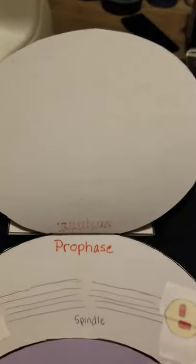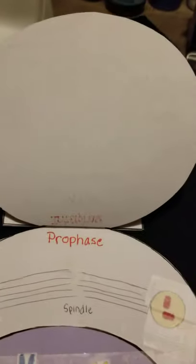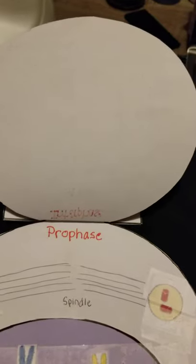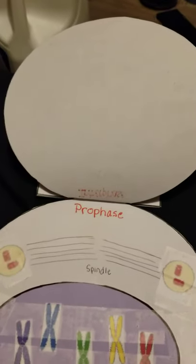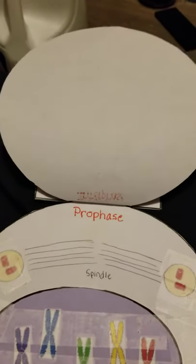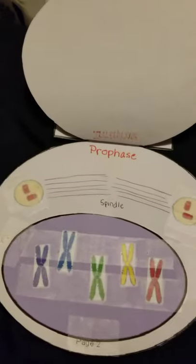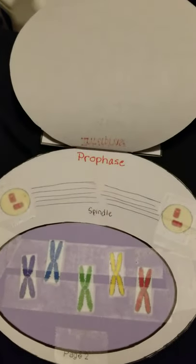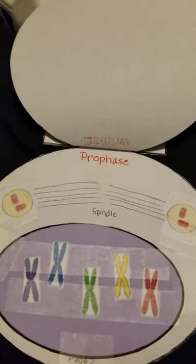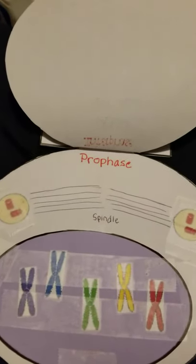The first stage is prophase, the longest phase of mitosis. In prophase, chromatin condenses into chromosomes, the nuclear envelope breaks down, and centrioles near the nucleus move to the opposite poles. You can see the two groups of centrioles moving to the poles.